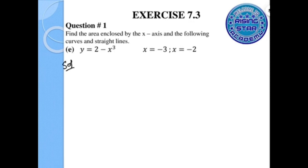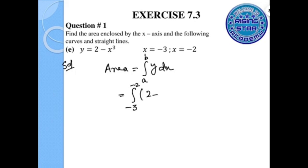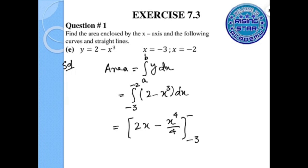In the next part, we apply the area formula: A equals the integral from a to b of y dx. The lower limit is negative 3, the upper limit is negative 2, and the function is 2 minus x cubed. Integrating, 2 becomes 2x and x cubed becomes x to the power of 4 over 4, evaluated from negative 3 to negative 2.